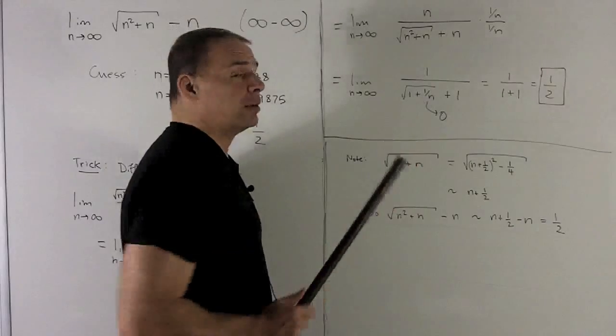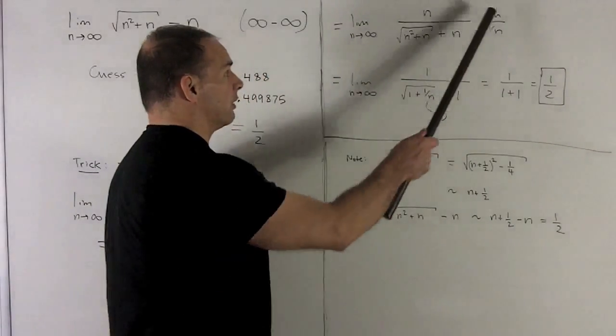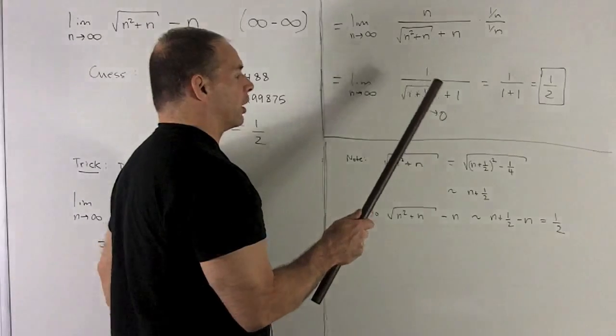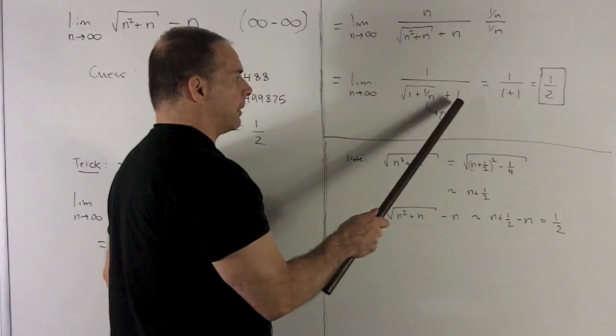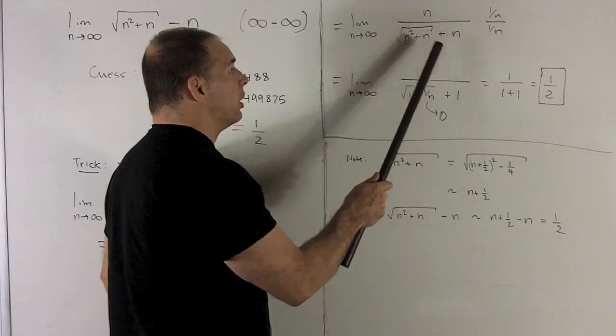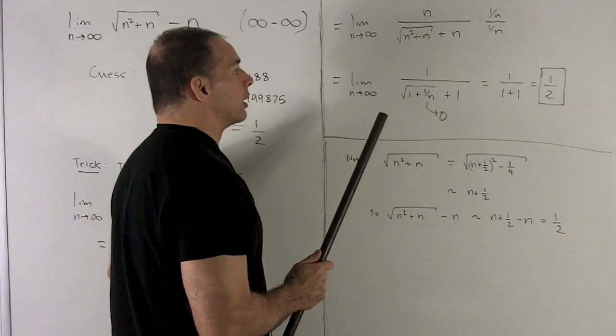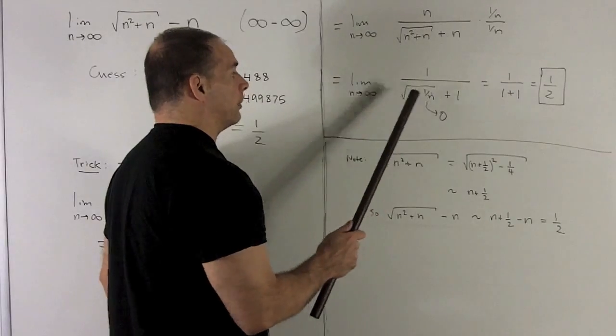I'm going to divide top and bottom by n, same as multiplying top and bottom by 1 over n. So that's going to give me a 1 on the numerator. For the n in the denominator, I get a 1. And then for the radical in the denominator, we're going to move that 1 over n to the inside as 1 over n squared. So it's going to give me a 1 plus a 1 over n.